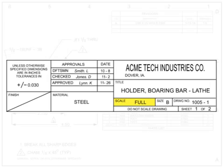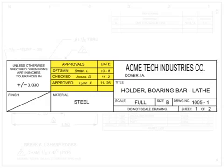The signature block contains all signatures required for the drawing to be officially released and published by the creator. Signatures and approvals should all be signed. If they are not, the drawing may not be an official release that is ready for manufacture.